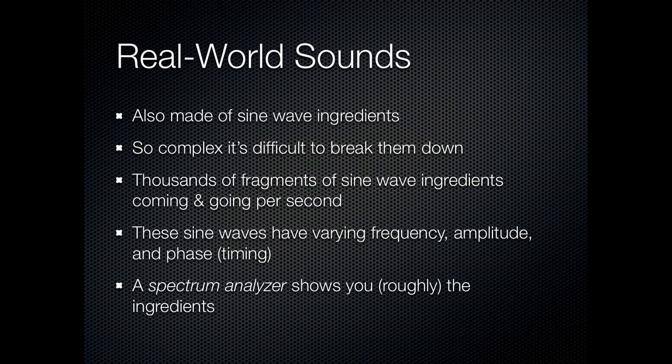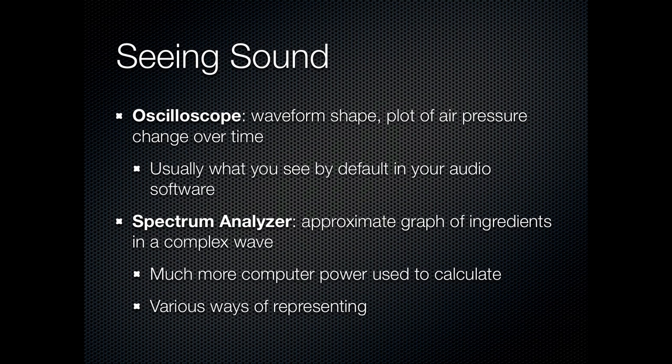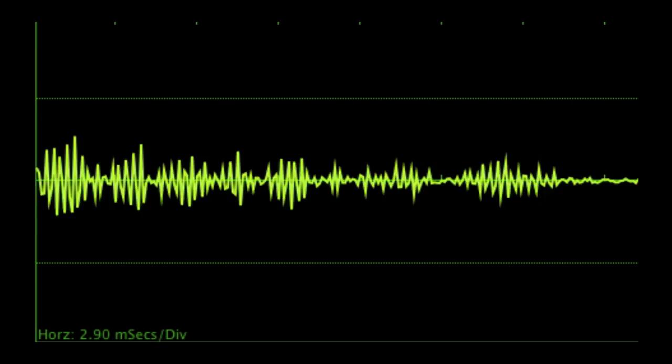You can get a rough idea of what ingredients are in a complex sound by using a spectrum analyzer. The spectrum analyzer is one of two major ways that we use graphs to see sound. The first and most common one is the oscilloscope view, which is the waveform shape that you would see in most audio software, and that is just a regular plot of air pressure change over time, or voltage change, or the numbers in samples.